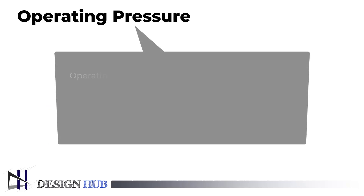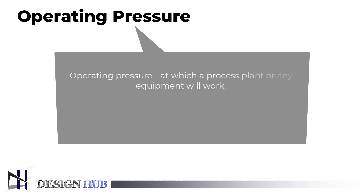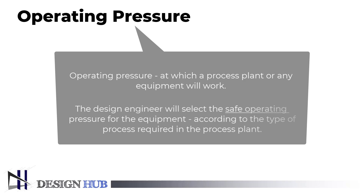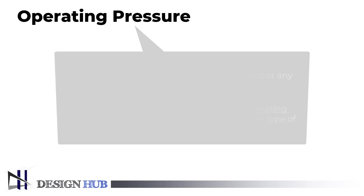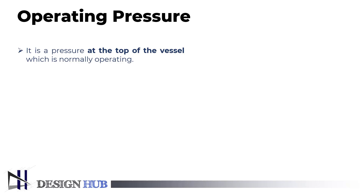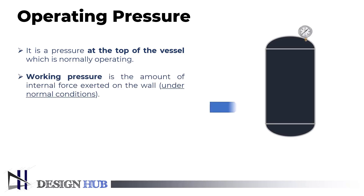First, we will see what is operating pressure. Operating pressure is the pressure at which a process plant or any equipment will work. The design engineer will select the safe operating pressure for the equipment according to the type of process required in the process plant. It is measured at the top of the pressure vessel. Working pressure is the amount of internal force exerted on the wall of the pressure vessel under normal conditions.